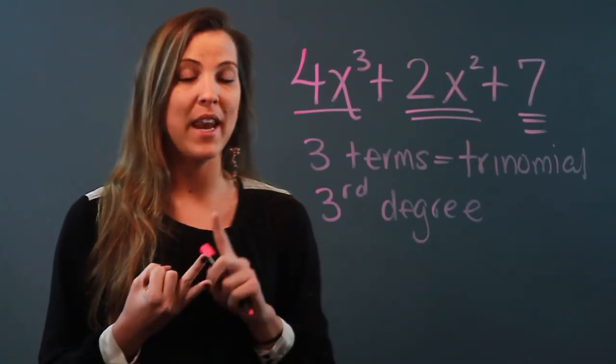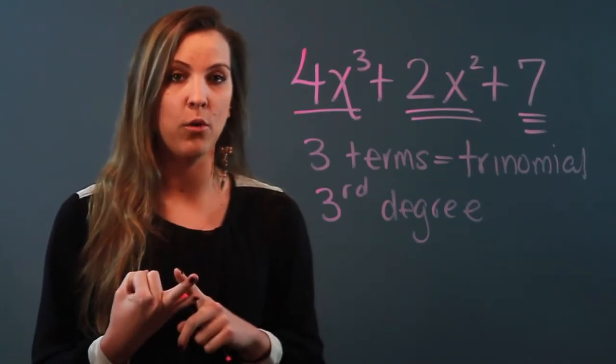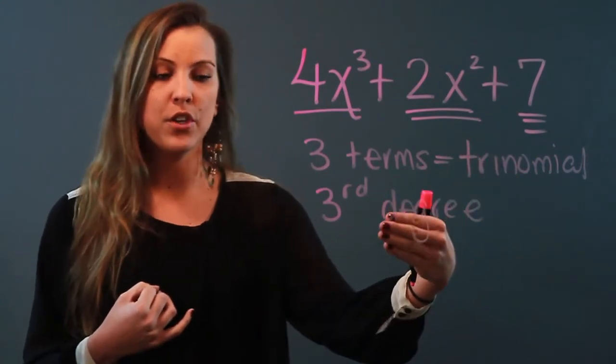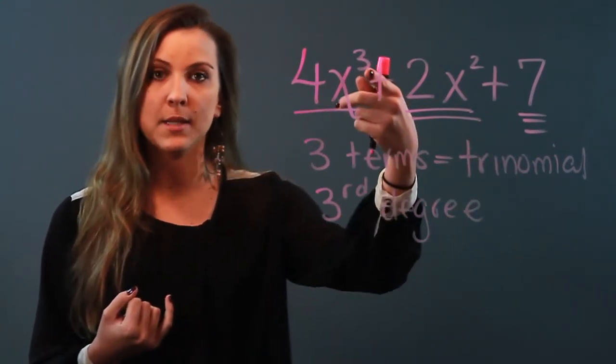If it had one term it would be called a monomial. If it had two terms it would be called a binomial. But because mine had three terms, it's called a trinomial.